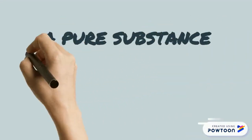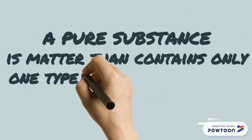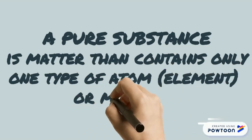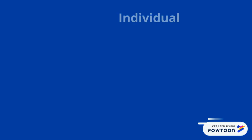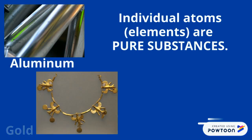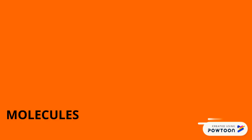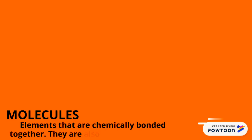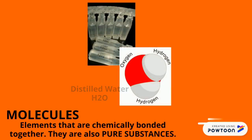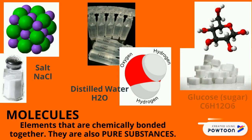A pure substance is matter that contains only one type of atom or molecule. Individual atoms are pure substances, such as aluminum, gold, and copper. Molecules are elements that are chemically bonded together — they're also pure substances. Some examples are distilled water, salt, and sugar.